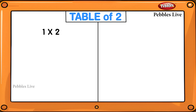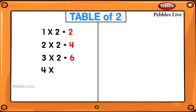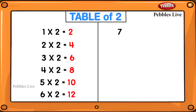1 two is 2, 2 twos are 4, 3 twos are 6, 4 twos are 8, 5 twos are 10, 6 twos are 12, 7 twos are 14, 8 twos are 16.